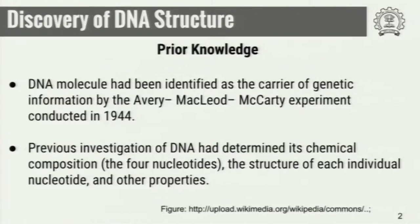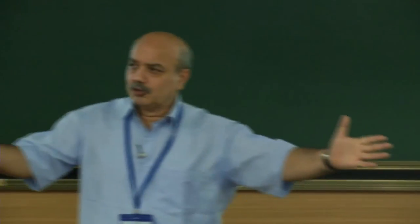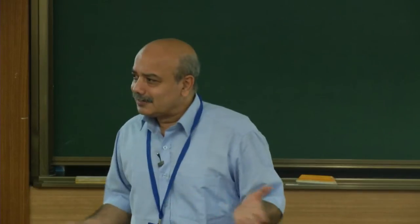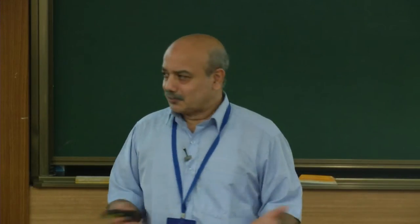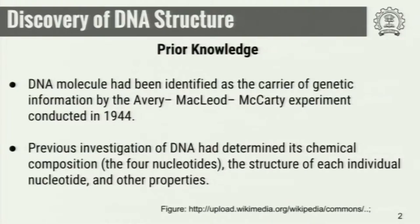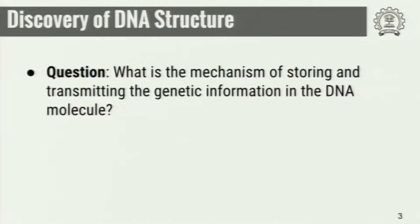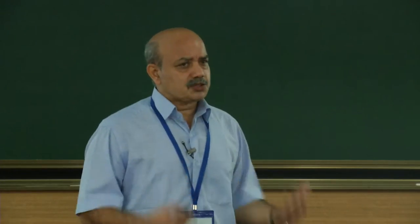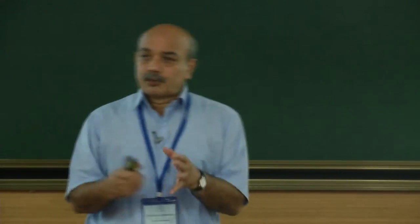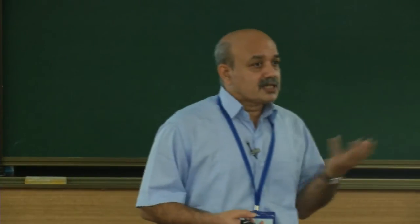Subsequent investigations had also revealed that DNA molecules consist of four nucleotides: adenine, thymine, guanine and cytosine — these four basic building blocks were known. The structure of individual nucleotides and their properties were known. The question being asked was: what is the mechanism of storing and transmitting genetic information in the DNA molecule? Individual components were known, composition was known — but how they were arranged was the key to answering how genetic information is stored and transmitted.